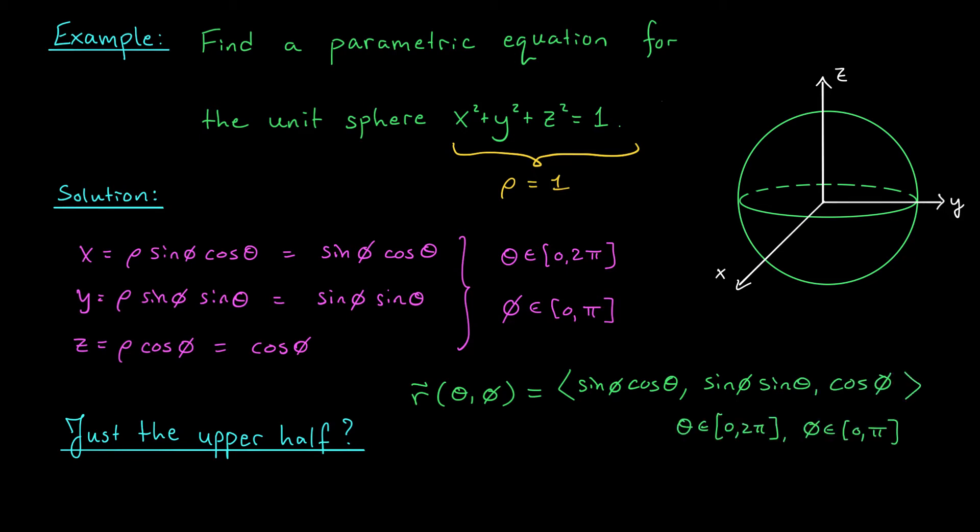Now, as a follow-up question, what if you wanted just the upper half of the sphere? Easy. We already have a parametrization for the whole sphere. Now, we just have to restrict our Z value. If Z is going to be greater than or equal to 0, we want cos φ to be greater than or equal to 0. And therefore, φ has to be somewhere between 0 and π over 2. This makes sense, because φ is the angle made with the positive Z axis. If we go beyond π over 2, we're dipping below the XY plane.